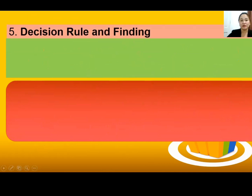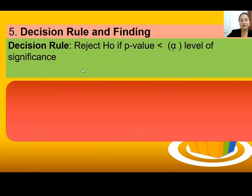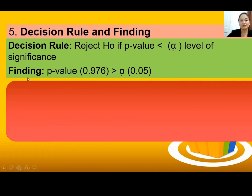Step 6 — Decision Rule and Findings: Reject the null if your p-value is less than the level of significance. Your p-value must be less than alpha, which is 0.05. Findings: the p-value is 0.976, which is greater than 0.05, so we fail to reject (accept) the null hypothesis.